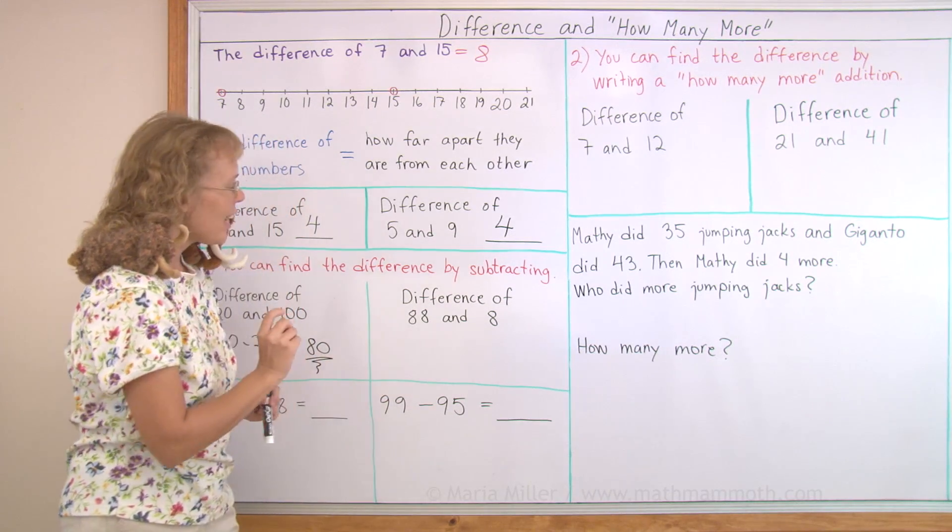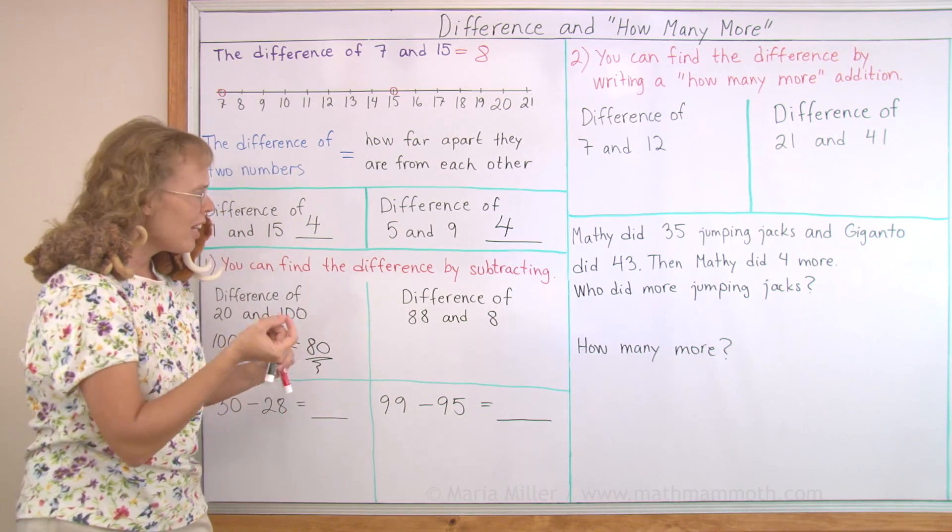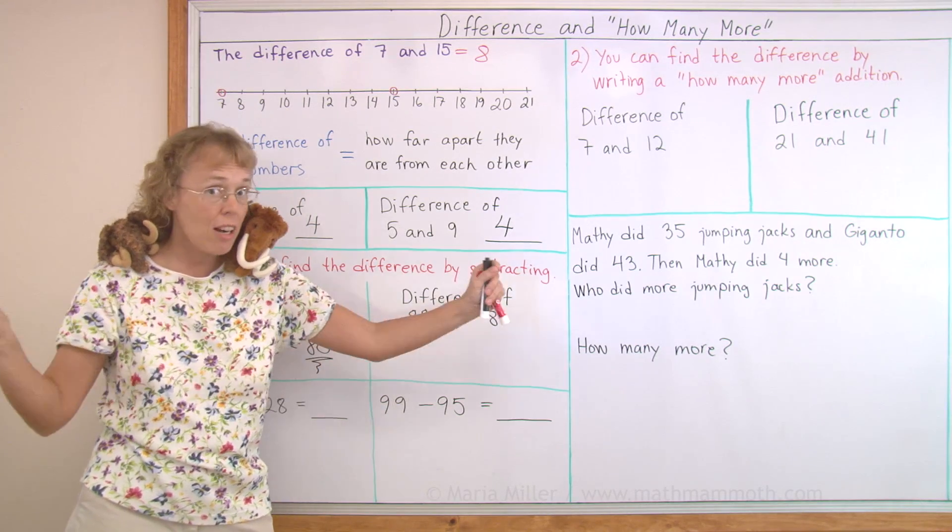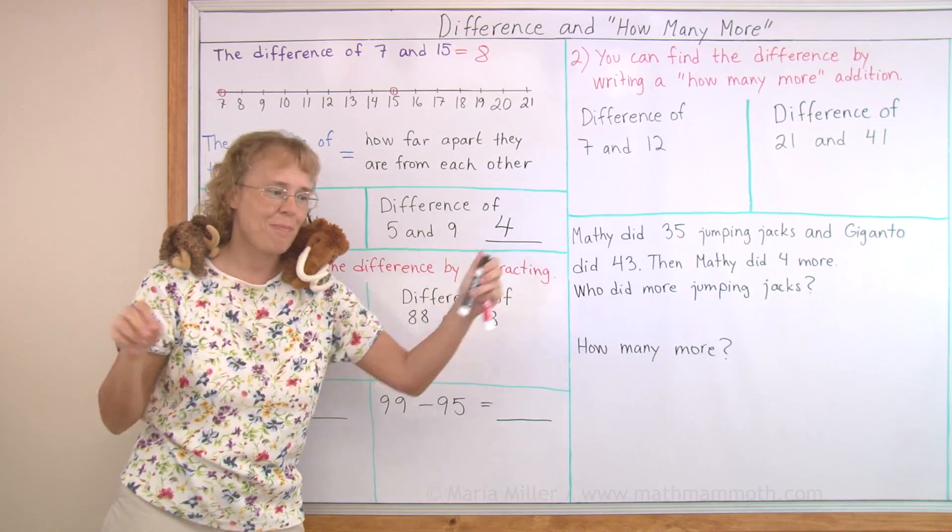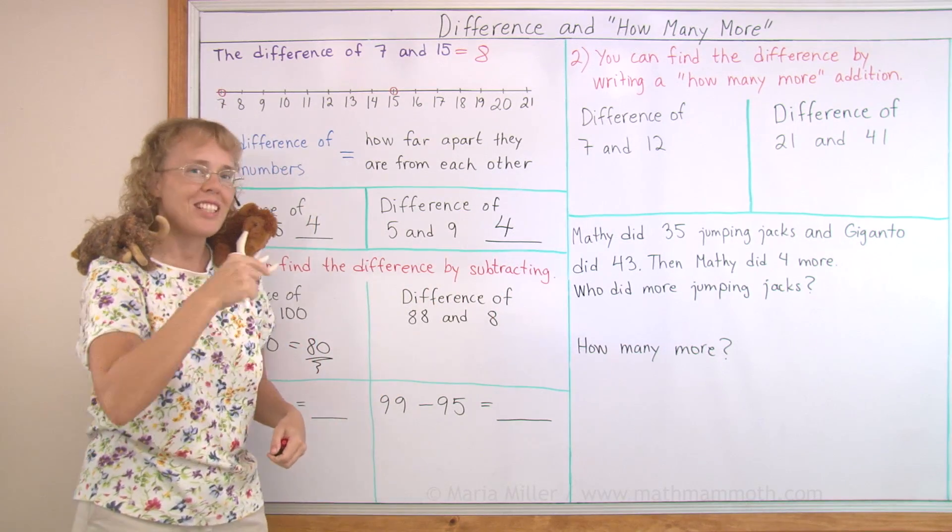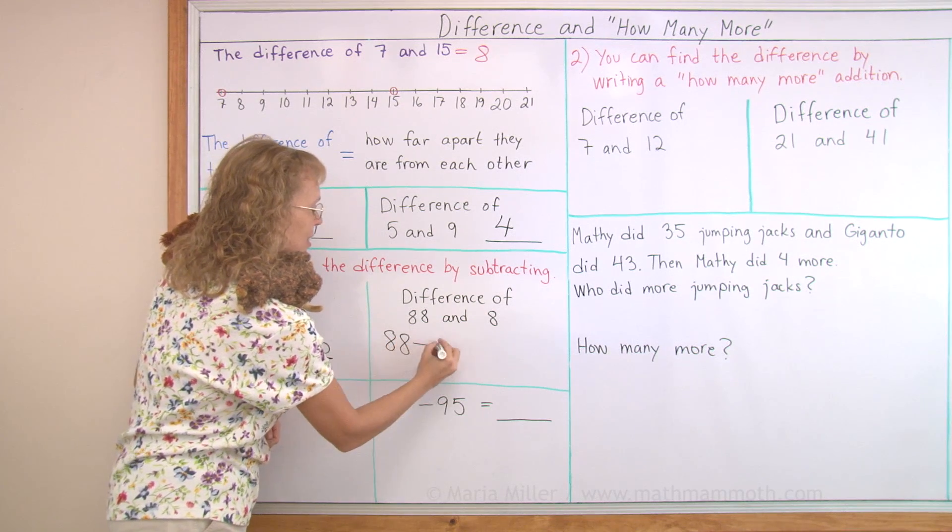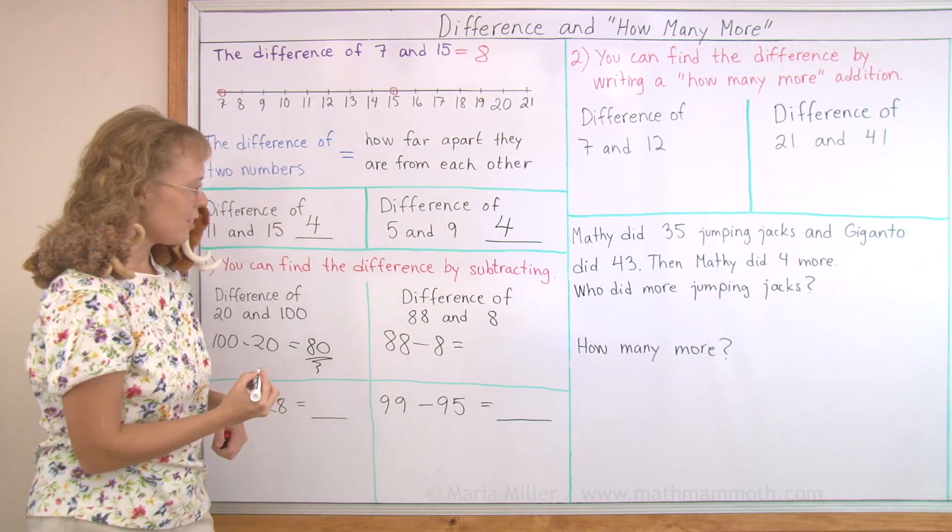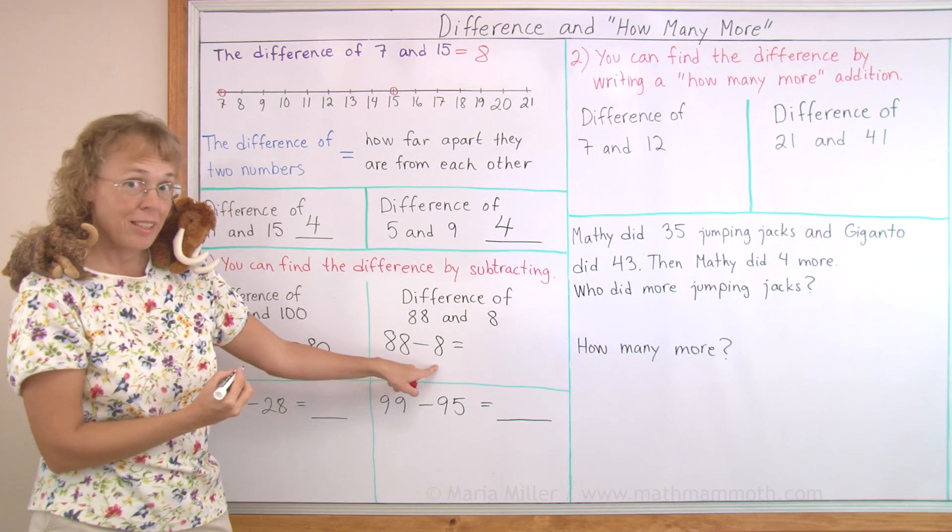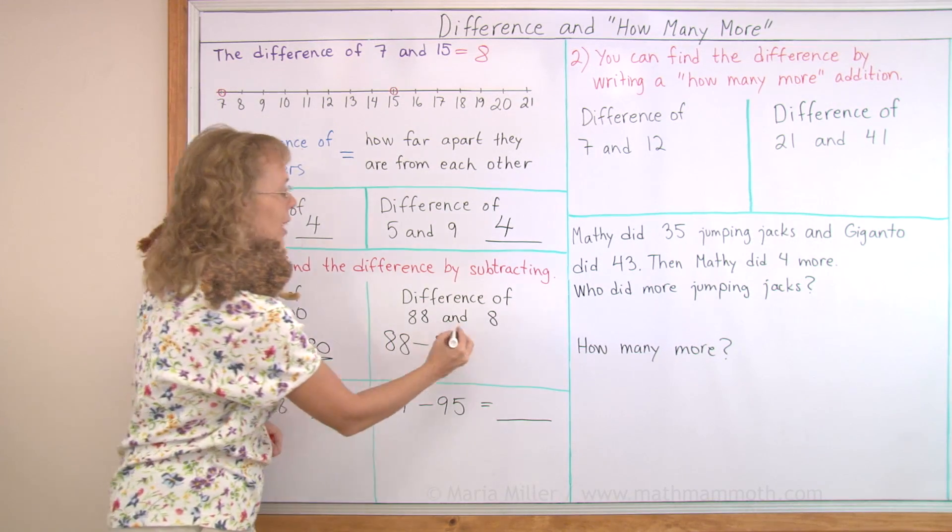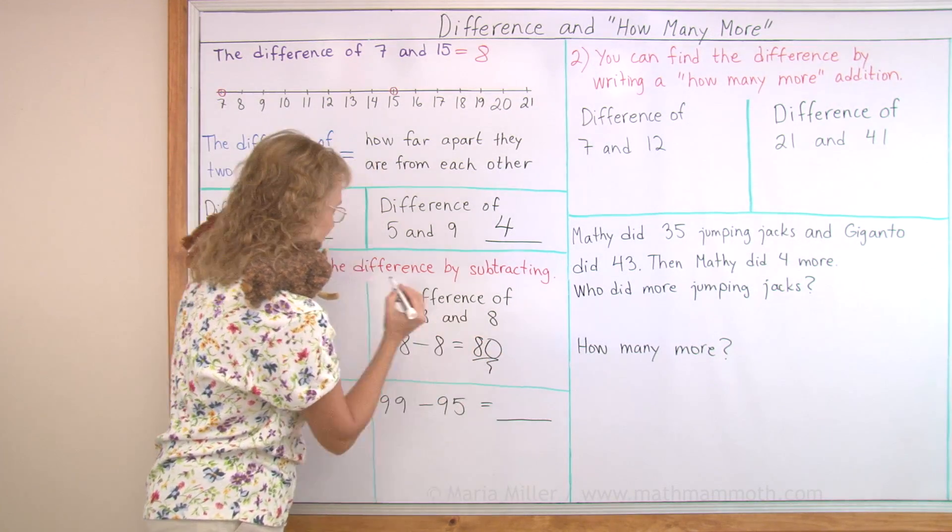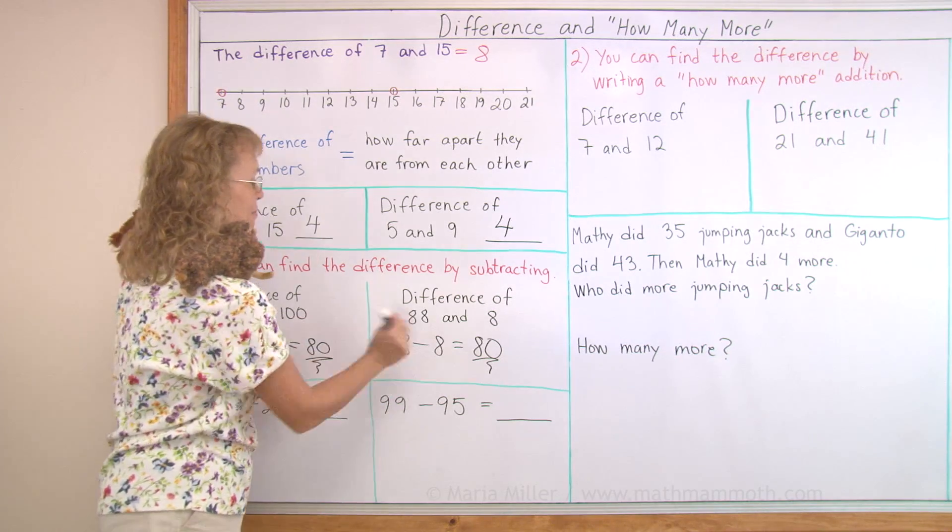The difference of 88 and 8, again, those two numbers are quite far apart on the number line. 8 and then 88. So you don't want to start counting jumps on the number line but you can subtract. 88 minus 8. And here's 8 minus 8 and the 8 tens, we get 80. 80 steps again.